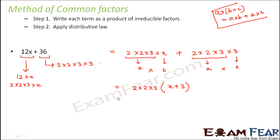This can be written as 2 times 2 times 3 which is 12, so 12 into x plus 3. This 12 into x plus 3 is the factor form of this expression. If you look at this expression, it has two terms: 12x and 36.